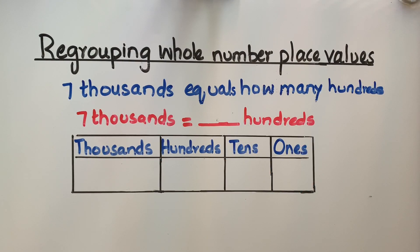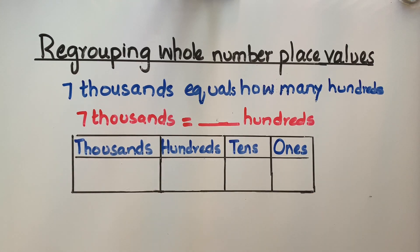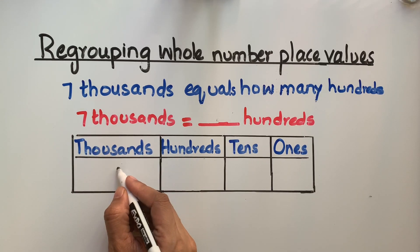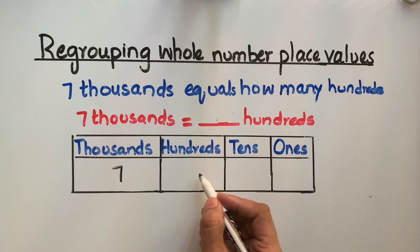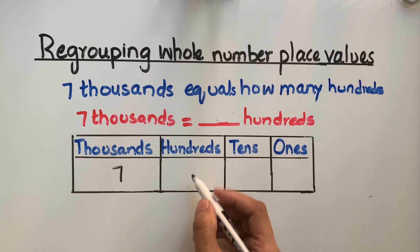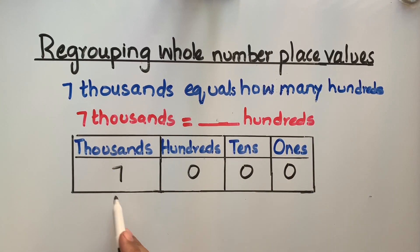The other way to find how many hundreds are in seven thousand is the easiest way — to take help from the place value table. Let's start writing seven thousand in the place value table. Seven comes in the thousands place, and the three empty spaces are filled by three zeros because we have seven thousand.